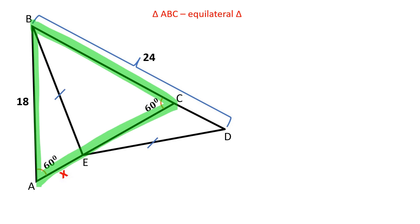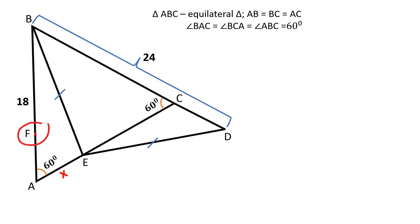Triangle ABC is an equilateral triangle. All its sides are equal in length. All three angles are 60 degrees. Let's mark point F on side AB so that AF is equal to AE.